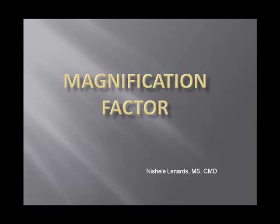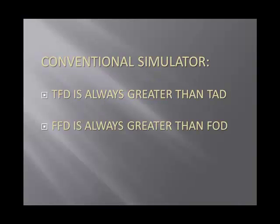Let's talk about magnification factor. Filming on a conventional simulator, the target-to-film distance is always greater than the target-to-axis distance. You may see this as SFD or SAD, which stands for source-to-film distance or source-to-axis distance — more commonly used when there were cobalt machines or machines with sources, though still used interchangeably today. It's also important to know that your film-to-focal distance is always greater than your film-to-object distance. You might see this as image-over-object size or object-over-image size when talking about magnification.